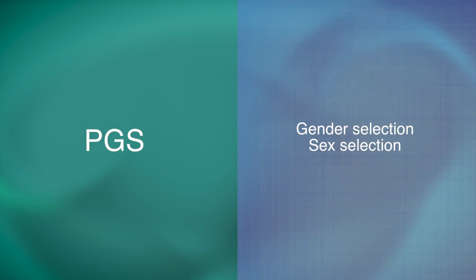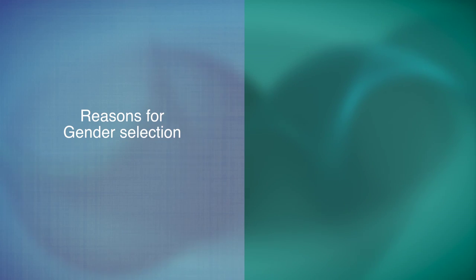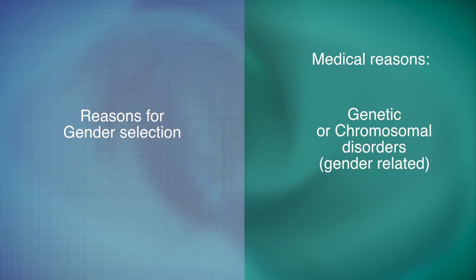PGS can be used for gender selection, also called sex selection, and is used by parents who choose to specify the sex of their offspring. Sometimes couples will do this for medical reasons, such as avoiding genetic or chromosomal disorders that are gender specific.